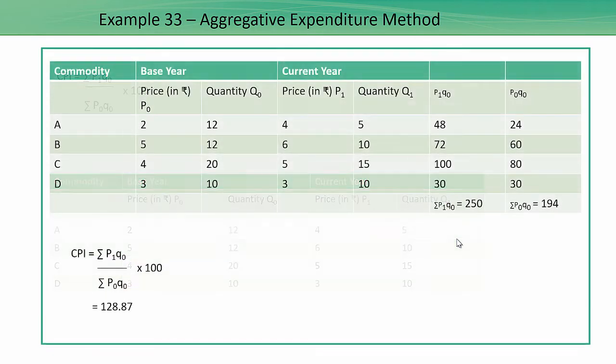Now we will convert it into this table wherein two additional columns would be P1 Q0, that is price of the current year multiplied by the quantity of the base year, and P0 Q0. Once you have done that, we will find out the summation of both these columns and my CPI would be summation of P1 into Q0 divided by P0 into Q0.